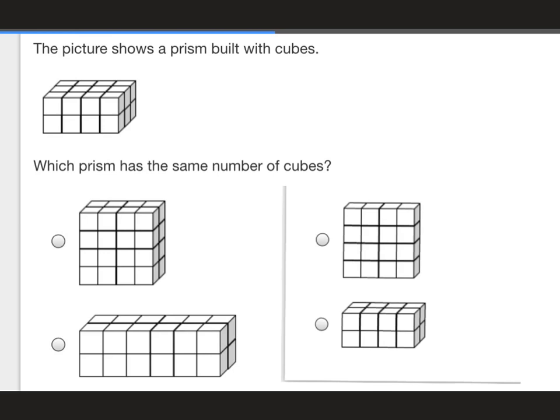For this question, it's given us a prism right here and they're asking which prism has the same number of cubes. So we need to know the number of cubes in the original prism. You can find length, width, and height, or you can count the face of what you can see and then see how many rows it goes back. We're going to count: one, two, three, four, five, six, seven, eight. And we know that it goes back three levels. So we can say eight times three, and that's going to give us a total of 24.